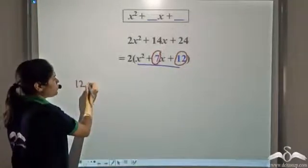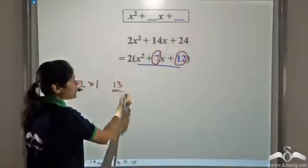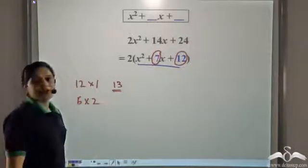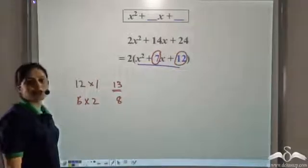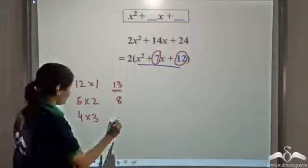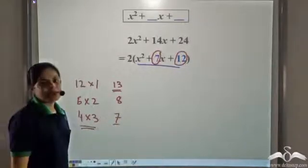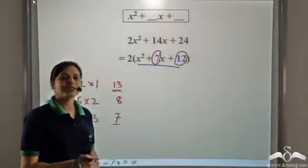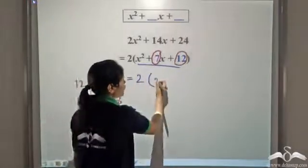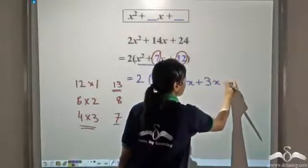Now, 12 = 12 × 1, but 12 + 1 = 13, which is not equal to 7. 12 = 6 × 2, and their sum is 8, which is not equal to 7. 12 = 4 × 3, and their sum is 7. So we have got the two numbers as 4 and 3, because 4 × 3 = 12 and 4 + 3 = 7.